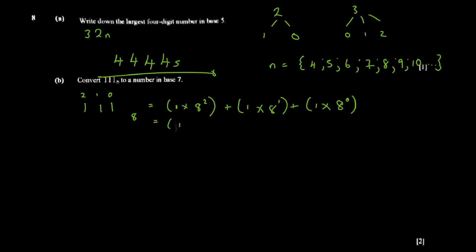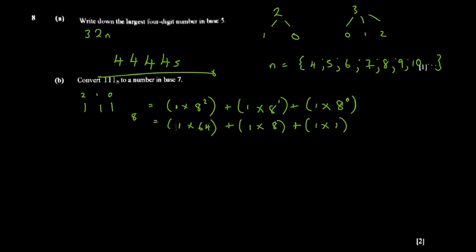So one times 64, plus one times 8, plus one times 1. The tricky part is that eight to the power zero is simply one — some students write eight here, which is wrong. So you get 64 plus 8 plus 1, which equals 73. You can write base ten next to it, but if you don't write a base, it's understood to be base ten.